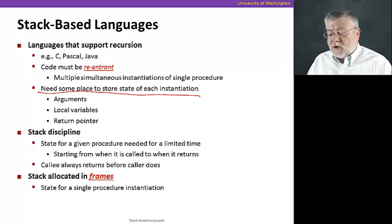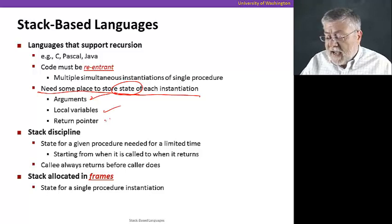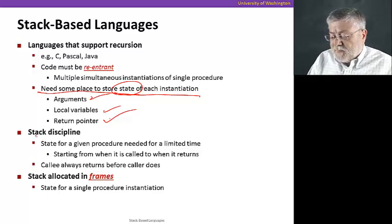And what information do we need to hold on to? Well, that's called the procedure's state, and that includes the arguments we called it with, any local variables it has to work on, and of course, a return address, a return pointer, to where it should go in the procedure that called it, including potentially itself.